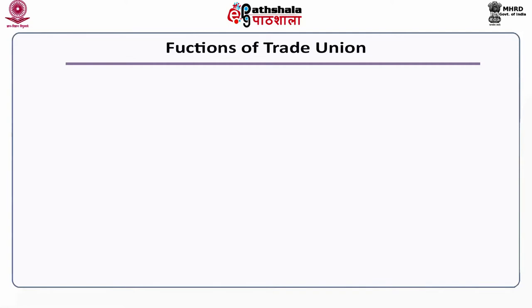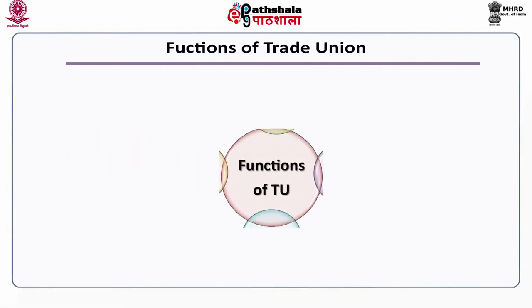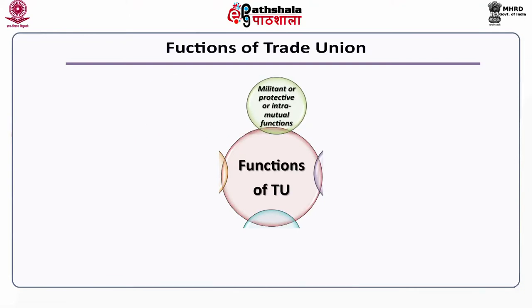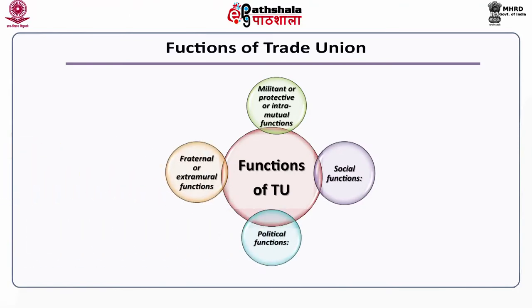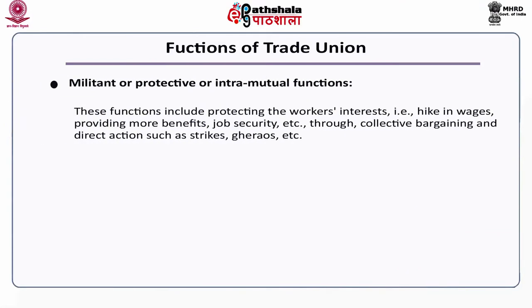Functions of a trade union. The functions of a trade union have been categorized into four heads: one is militant or protective or intra-mutual functions; then we have social functions; another set is political functions; and lastly, we have fraternal or extra-moral functions. Looking at the militant or protective or intra-moral functions, these include protecting the workers' interests — that is hike in wages, providing more benefits, job security, etc. — through collective bargaining and direct actions such as strikes and gheraos.